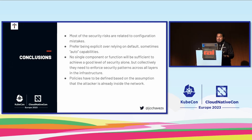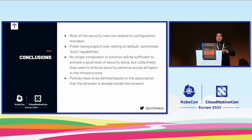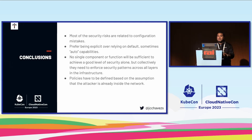In conclusion: most security risks are related to configuration mistakes — humans. You should always prefer being explicit about your rules over relying on automatic capabilities. No single component or function will be sufficient to secure your system by itself — you need a conjunction of many things to defend across all layers of your infrastructure. And policies have to be defined on the assumption that the attacker is already inside the network. You cannot always defend the castle from the outside; you also need means to defend from within. Thank you so much.